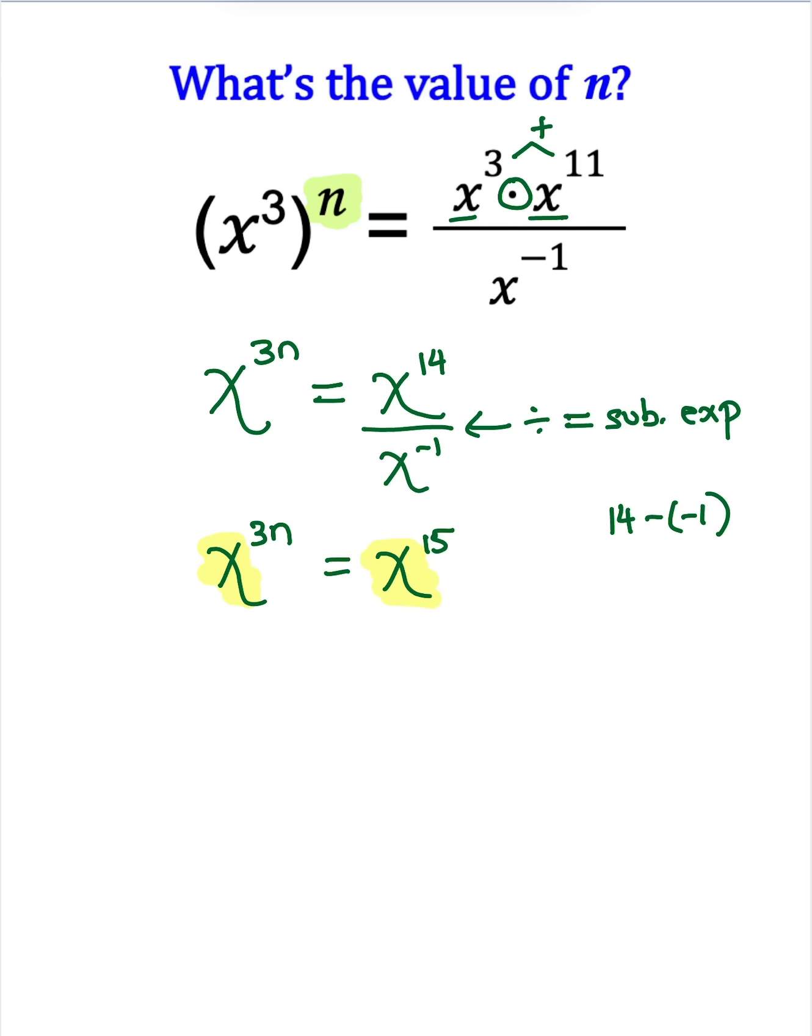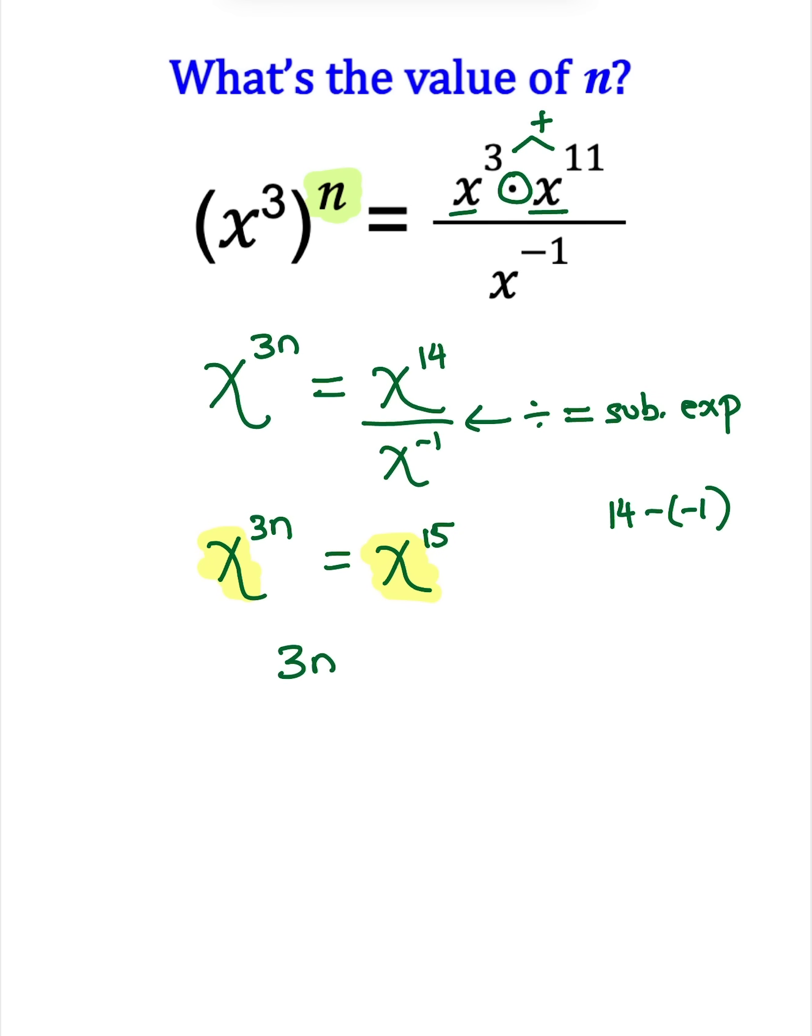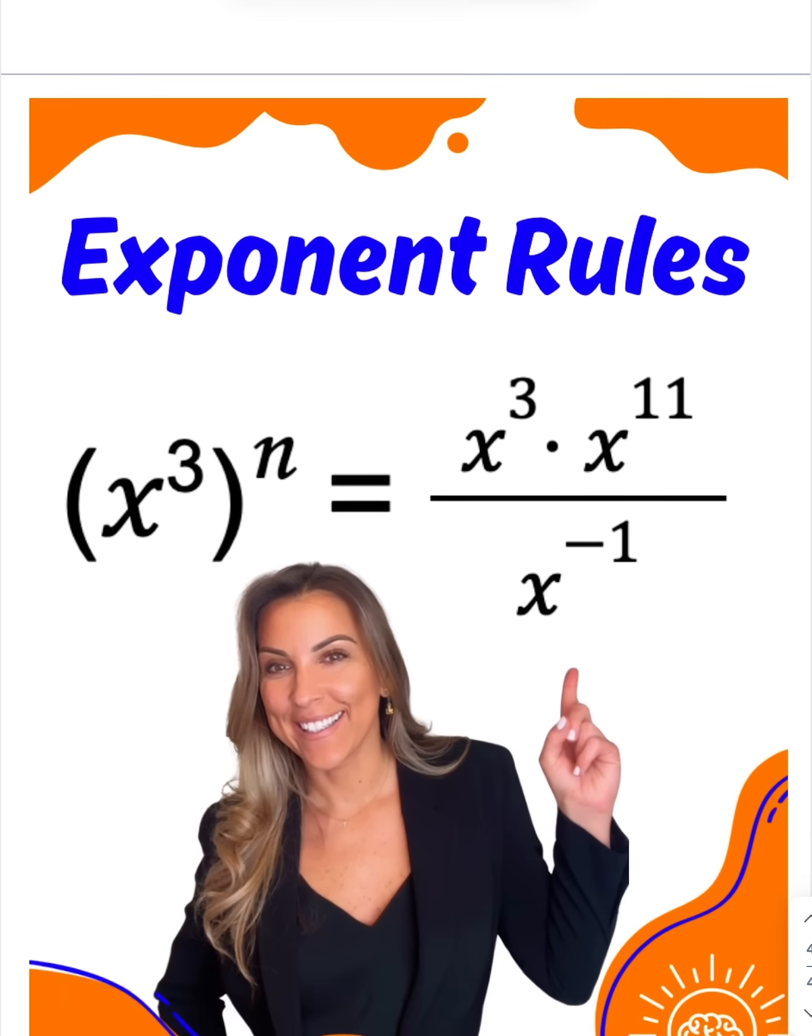Well, if x to the 3n is equal to x to the 15th, then 3n must be equal to 15. So all I'm doing now is solving a one-step equation. Let's get that n by itself by dividing by 3 on both sides, which leaves me with the fact that n is equal to 5.